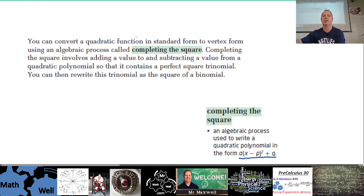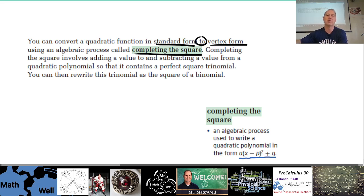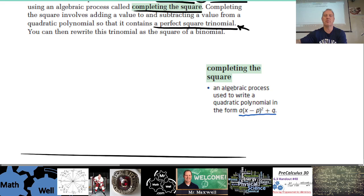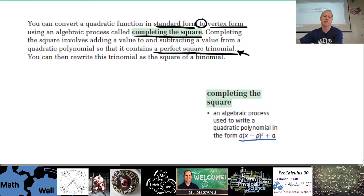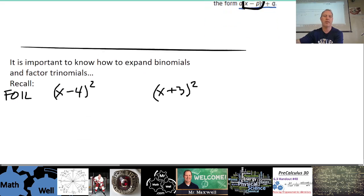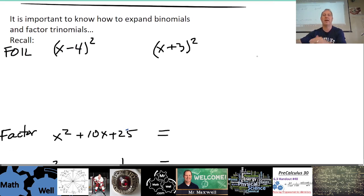You can convert quadratic functions in standard form to vertex form using a process called completing the square. It involves adding a value to and subtracting a value from a quadratic polynomial so that it contains a perfect square trinomial. Then we can rewrite the new trinomial as the square of a binomial. It's important to know how to expand binomials and how to factor them.